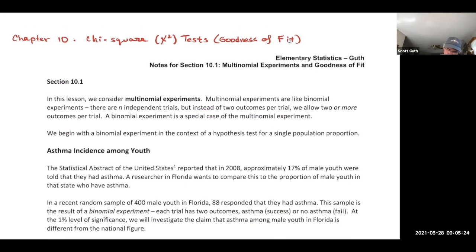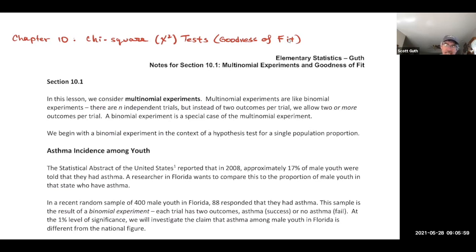In section 10.1 we're going to introduce the idea of a multinomial experiment, in the context of goodness of fit. A multinomial experiment is a logical extension of a binomial experiment — binomial has two outcomes; multinomial has more than two. I'm going to show you a new way to do an old hypothesis test: testing a claim about one population proportion using a chi-square test.